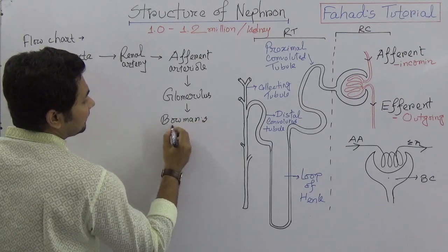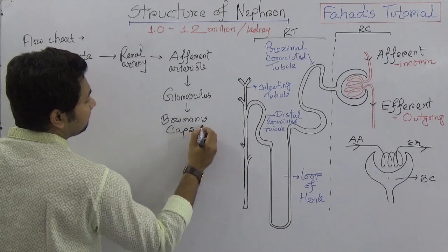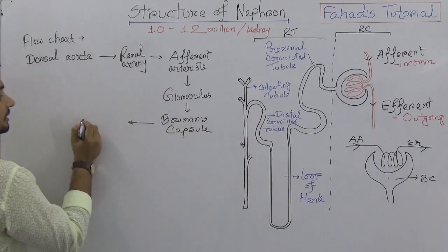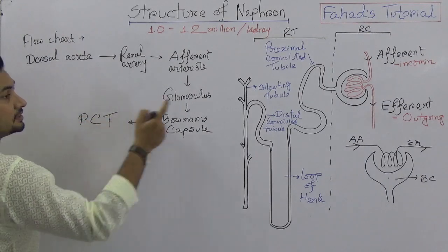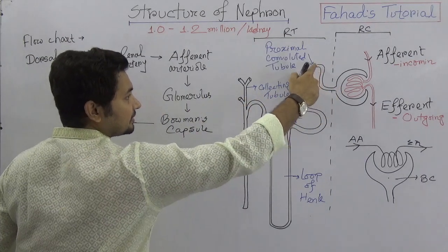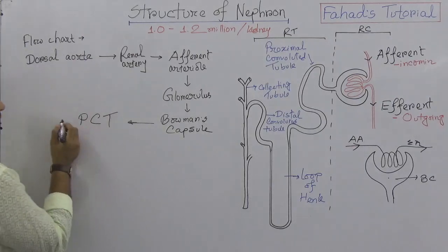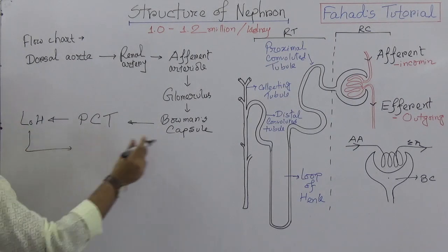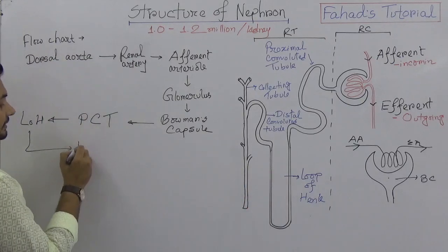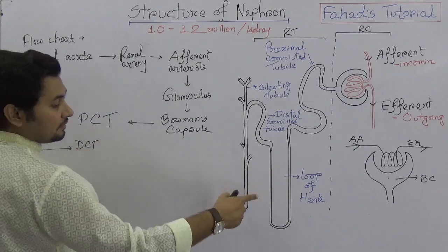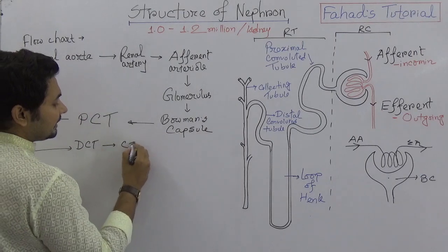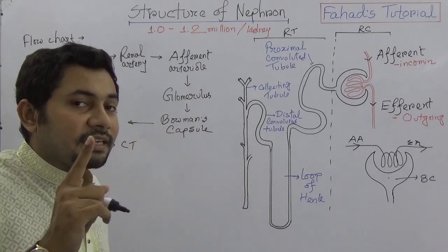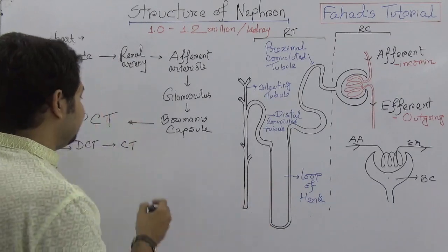From the glomerulus, it comes to the Bowman's capsule. From Bowman's capsule, it comes to the proximal convoluted tubule. From the proximal convoluted tubule to the loop of Henle. From the loop of Henle, it comes to the distal convoluted tubule, and from the distal convoluted tubule to the collecting tubule.